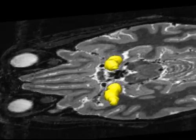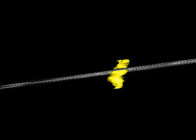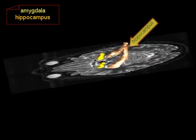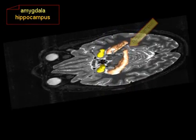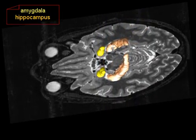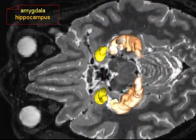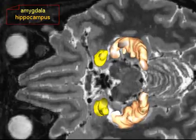While the amygdala is a clear nuclear structure, the hippocampus is a slender and curved, elongated structure, located at the bottom of the inferior horn of the lateral ventricle.